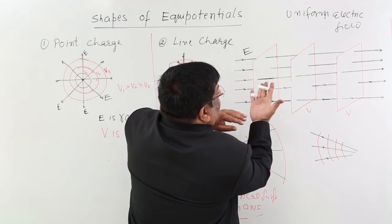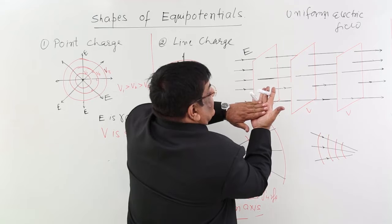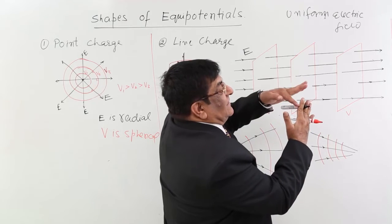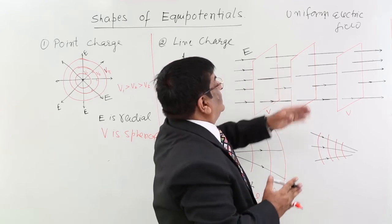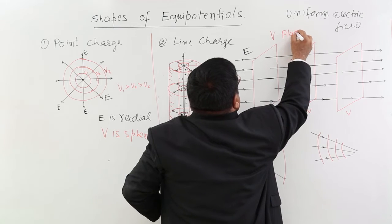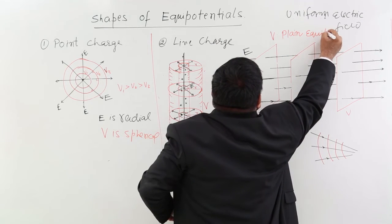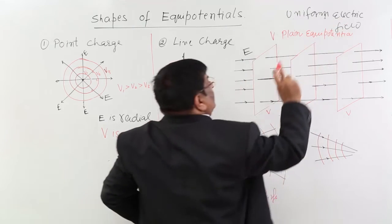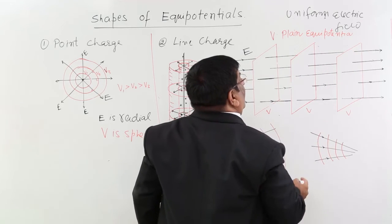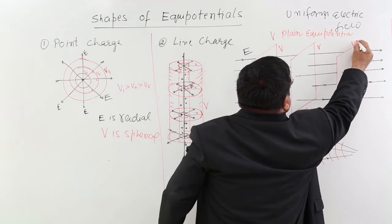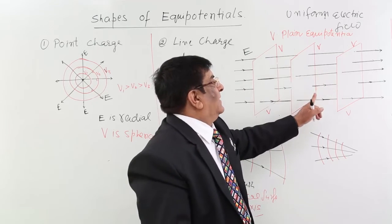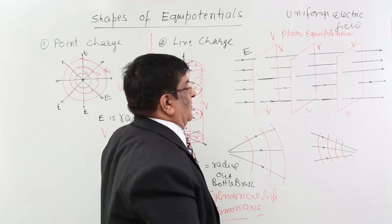These are the arrows representing the electric field, and this is the surface which is the equipotential surface, because it fulfills the condition of 90 degrees to the field. So these are known as plane equipotentials. If it is a uniform electric field, then the spacing of the equipotentials will also be the same, and all will have the same potential difference V along the uniform electric field.